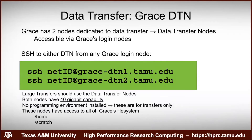For large transfers, instead of using the login node, log into a data transfer node. Grace has two dedicated data transfer nodes — we call these DTNs. They're accessible via Grace's login node: first SSH to grace.tamu.edu, then SSH to grace-dtn1.tamu.edu or grace-dtn2.tamu.edu. You can't SSH directly to them — you have to go through Grace's login node first.